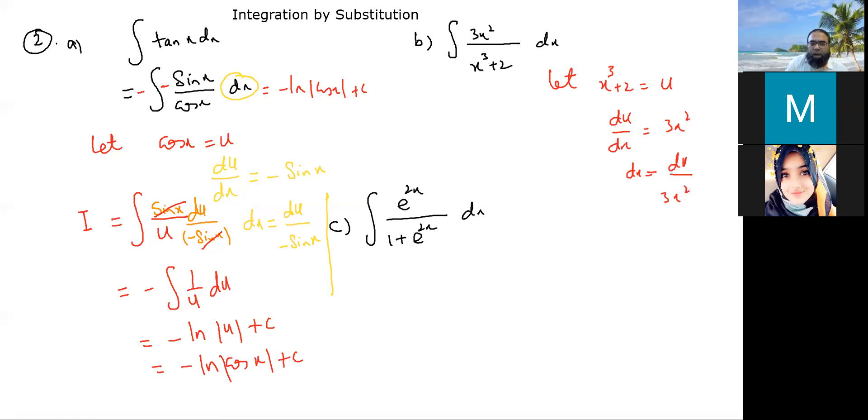So, if I put this back into this over here, this becomes 3x squared over u into du over 3x squared. We can cancel them. This is simply 1 over u du, which is basically going to be ln u plus c. You change that u with x cubed plus 2, so you get that as x cubed plus 2 plus c.